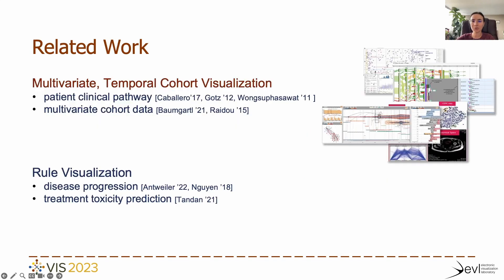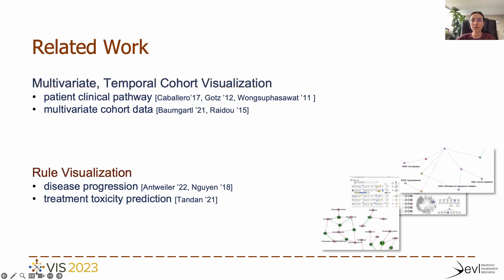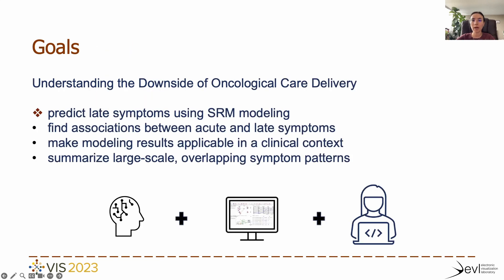In medical applications, multivariate temporal cohort data visualization typically focuses on summarization and aggregation of patient features, but rarely accounts for co-occurring patient measurements. Role visualization for medical domains has focused on disease progression or treatment toxicity prediction, but does not support temporal associations. Our work tackles multivariate temporal data modeling and prediction with sequential mining and applies this to the late-stage symptom problem. The resulting rules leverage the assessment of temporal symptom associations in a clinical context, and we handle specific challenges related to large-scale overlapping patterns.